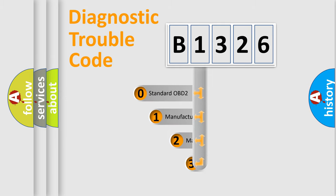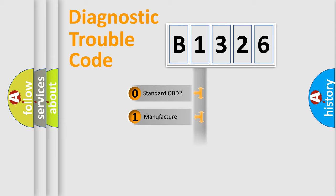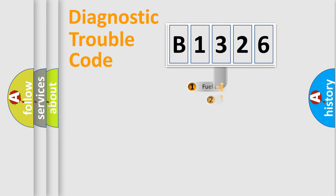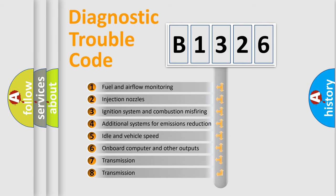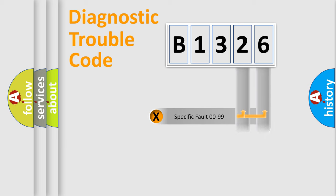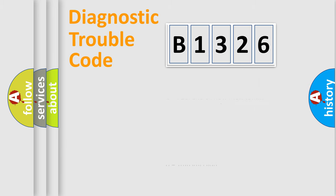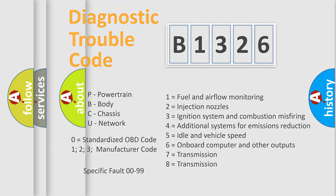This distribution is defined in the first character of the code. If the second character is expressed as zero, it is a standardized error. In the case of numbers 1, 2, or 3, it is a more specific expression of a car-specific error. The third character specifies a subset of errors. This division is valid only for the standardized DTC code, and only if the second character is expressed by the number zero.